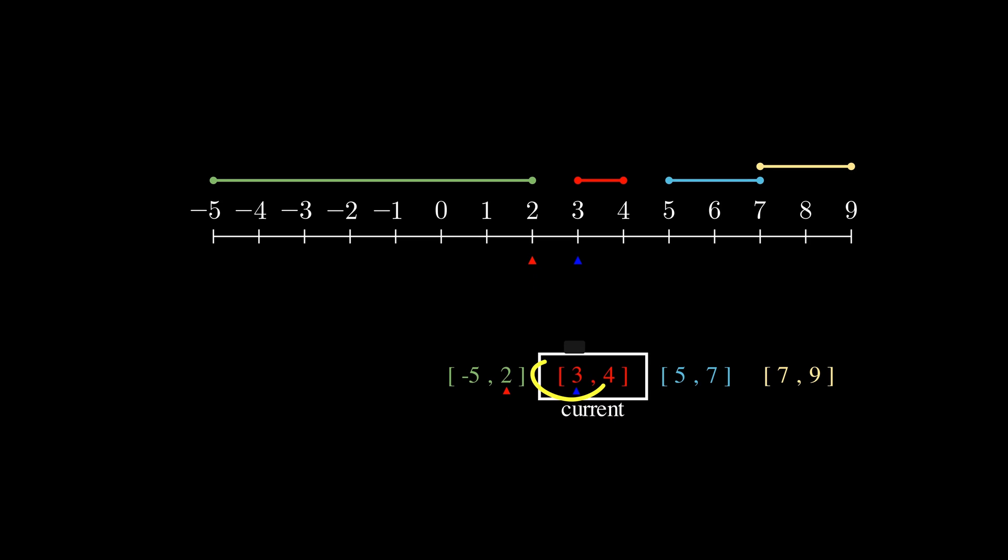Now moving on to the next one, the start of our current interval 3 is greater than the end of our previous interval 2. This means that they don't overlap, as you can see on the number line. So we don't merge, we just move on and leave it as is. And same here, 5 is greater than 4, so we don't merge, we just move on. Lastly, the start of our current interval 7 is equal to the end of our previous interval 7. So they just barely overlap, which means that we need to merge them. And when all is said and done, we're left with these three intervals here.